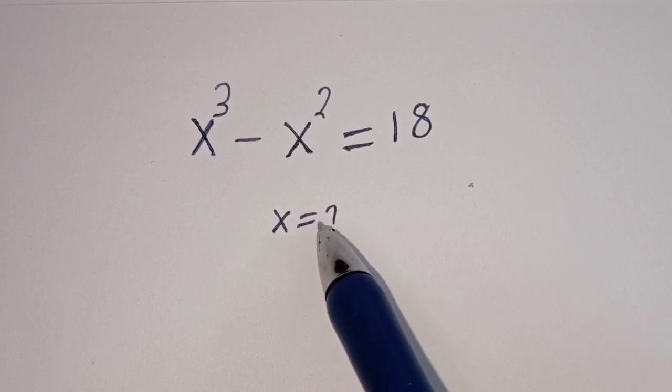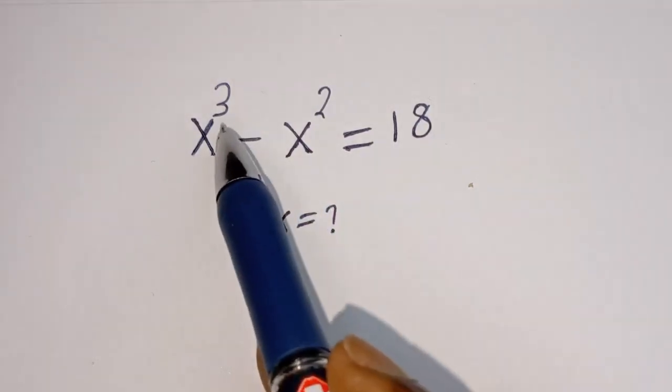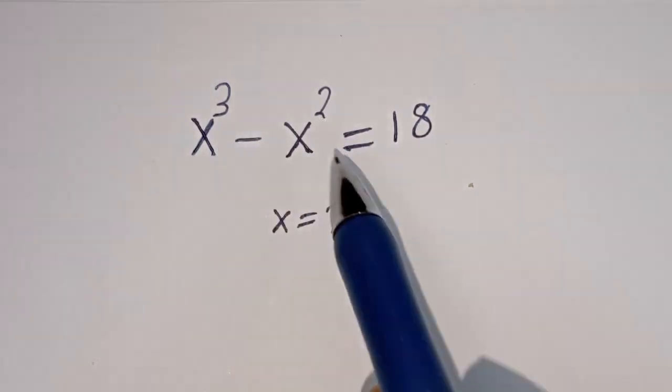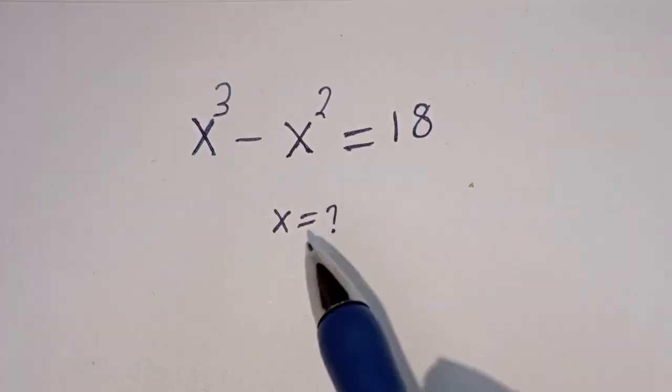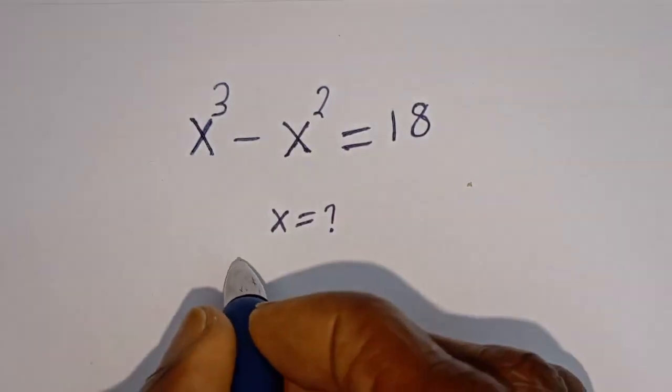Hello, how to solve for S in this equation: S to the power of 3 minus S squared is equal to 18. Solution.